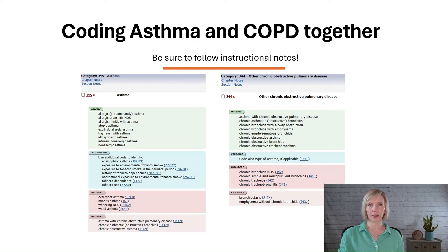This means that if the specific type of asthma is documented, an additional code should be assigned. However, it is important to understand that if the specific type of asthma is not specified, code J45909, Unspecified Asthma Uncomplicated, should not be assigned separately, as this code does not describe a specific type of asthma.